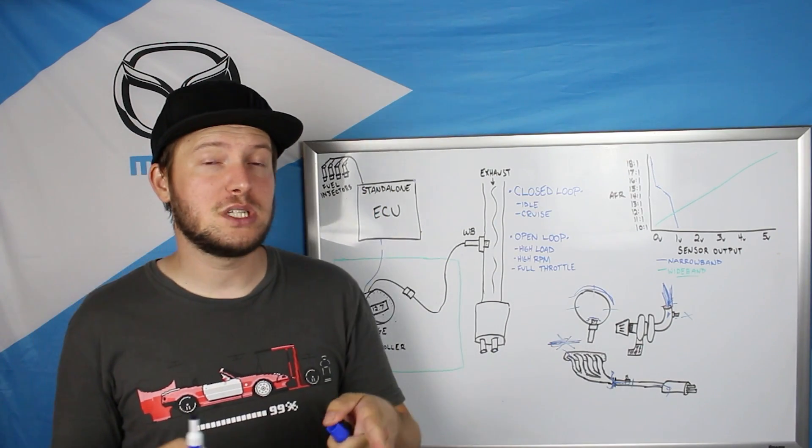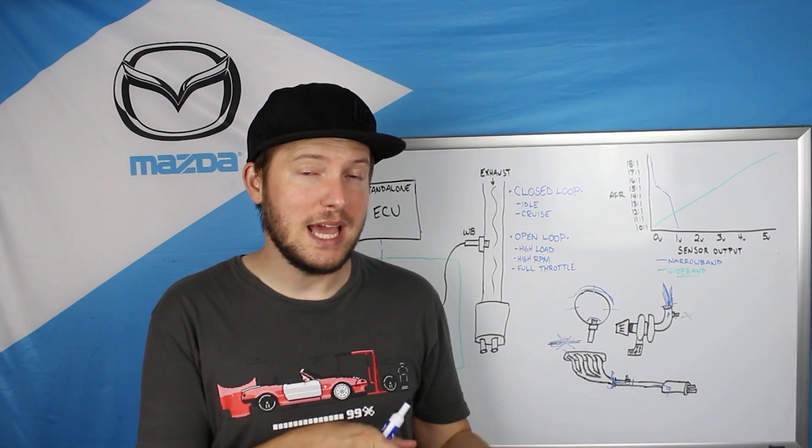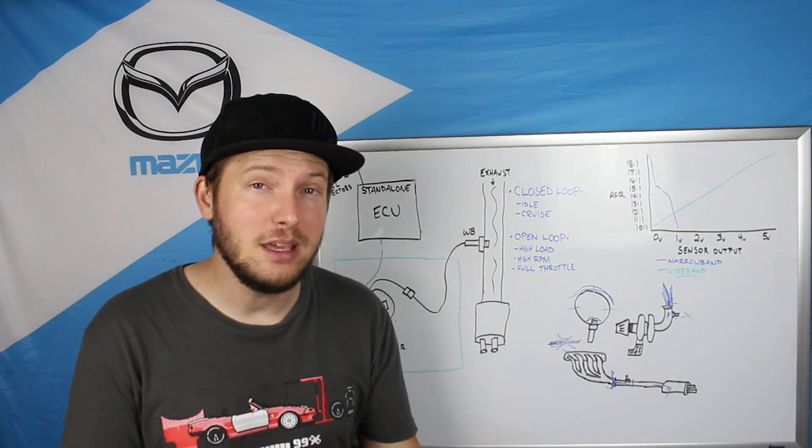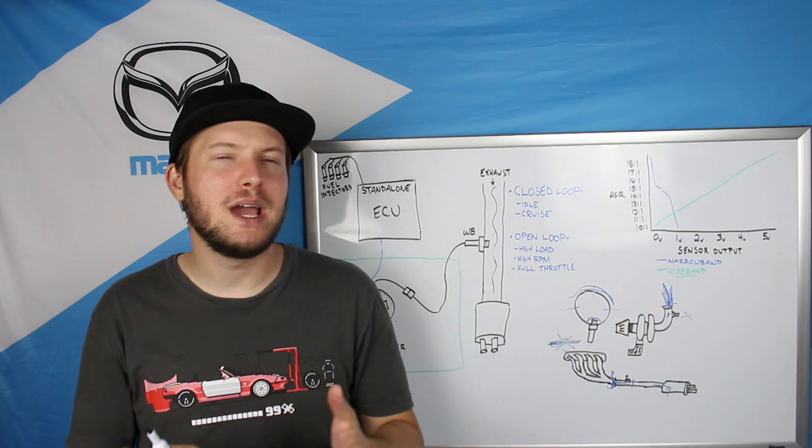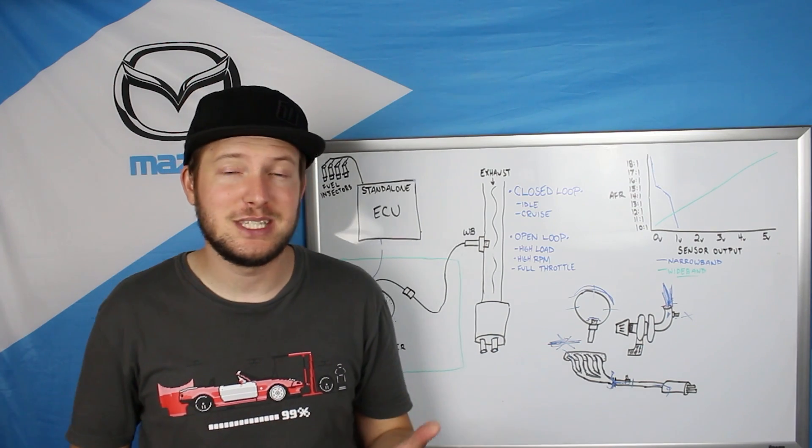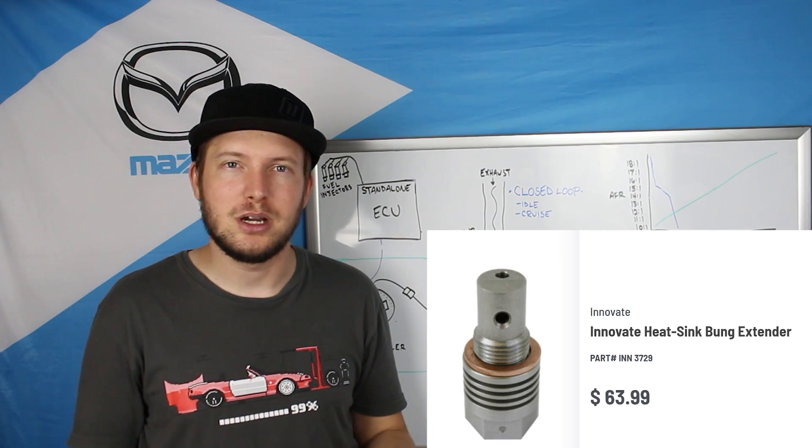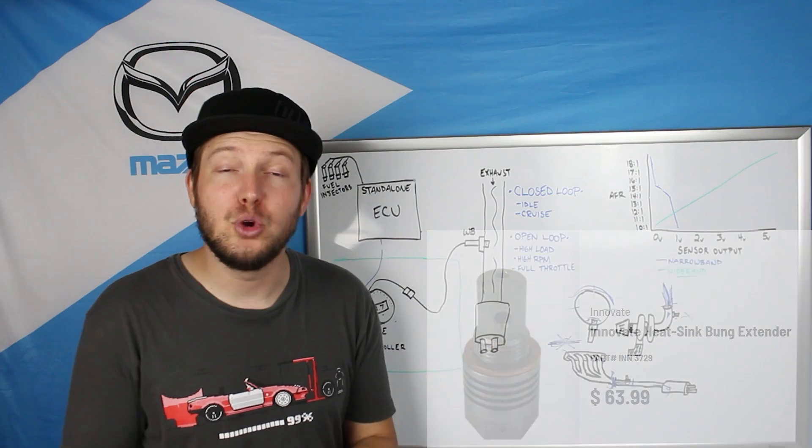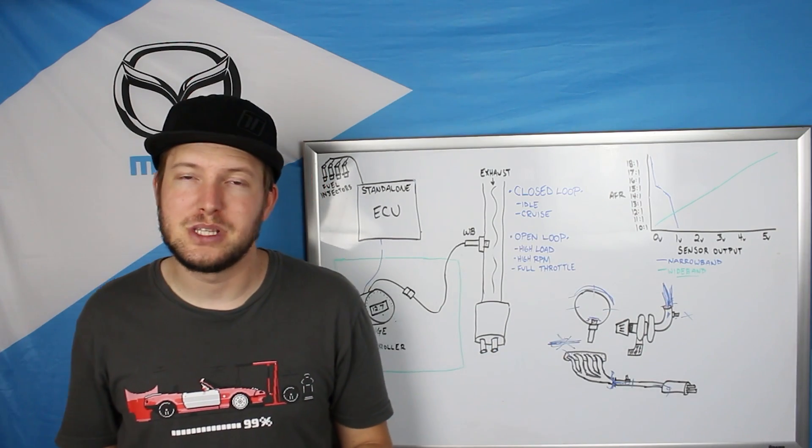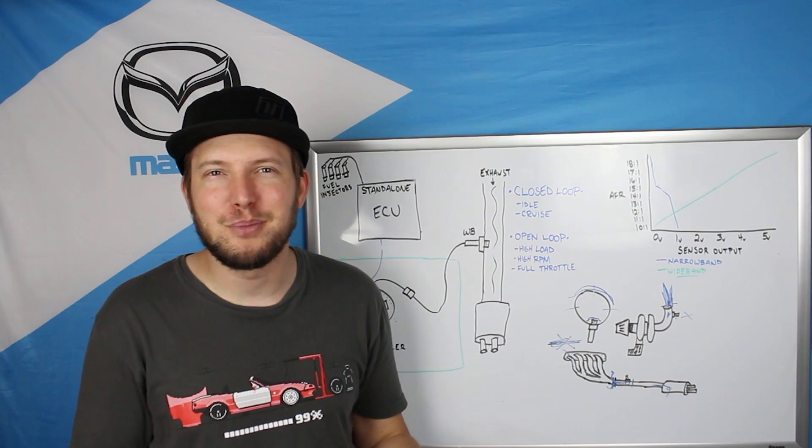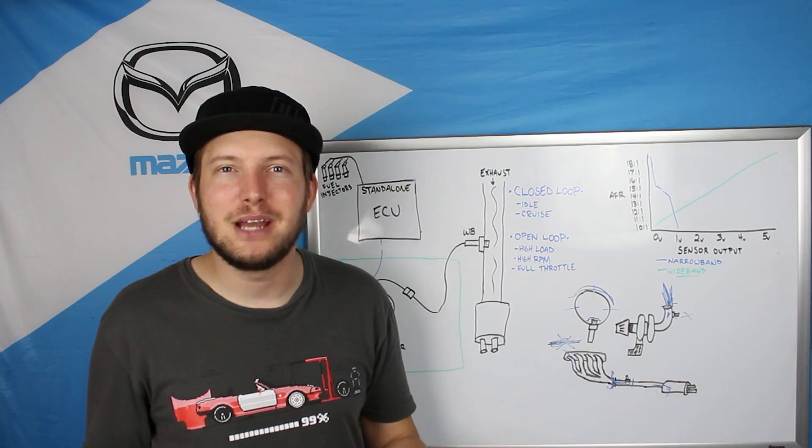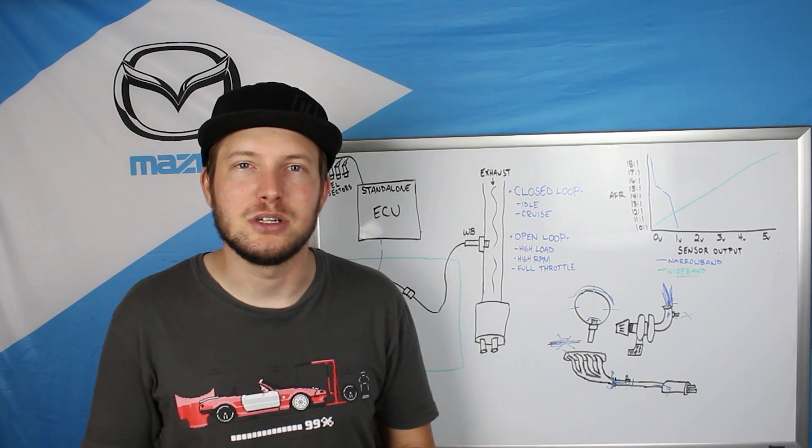And you don't want to have your sensor too close to the engine or turbo to where it's overheating. If you do have it like right off the back of the turbo, you might have to invest in an oxygen sensor heat sink, which obviously helps cool the sensor. You don't want to have it too far away from the engine where the sensor is having trouble staying warm, usually somewhere in the downpipe or in the headers or right after the headers is perfect for 99% of cars.